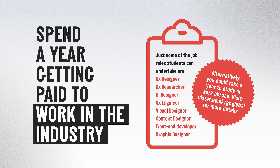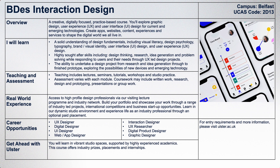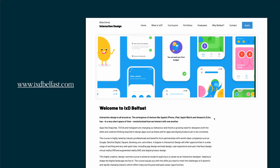For further entry requirements and more information, visit the website at ulster.ac.uk. Our UCAS code is 2D13. Just keep an eye out in case the course name changes — we may be Interaction Design or Digital Design. If you want to know more specifically about our course, visit ixdbelfast.com and look at the Graduates section in the navigation bar to see the graduate showcase.